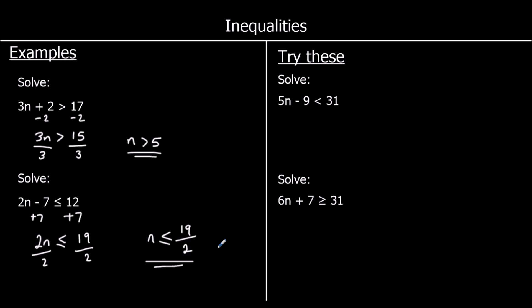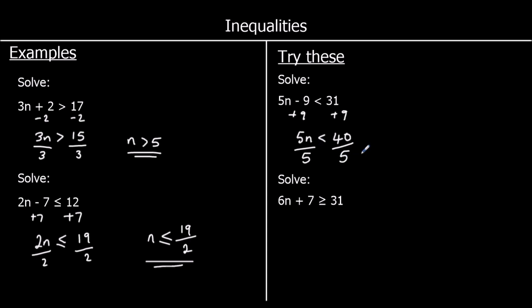The first one: 5n − 9 < 31. I'll get rid of the minus 9 by adding 9 to both sides, which leaves 5n < 40. Then dividing both sides by 5 gives n < 8.